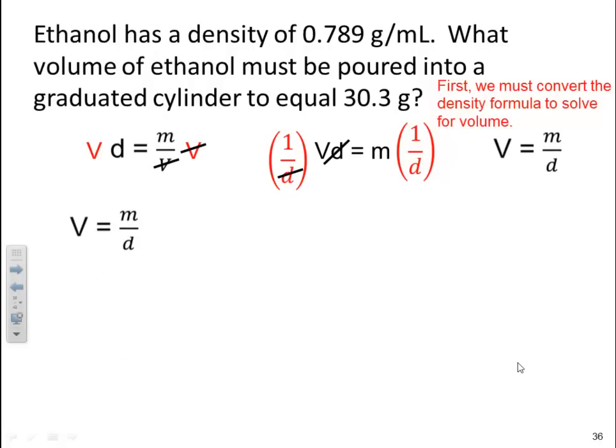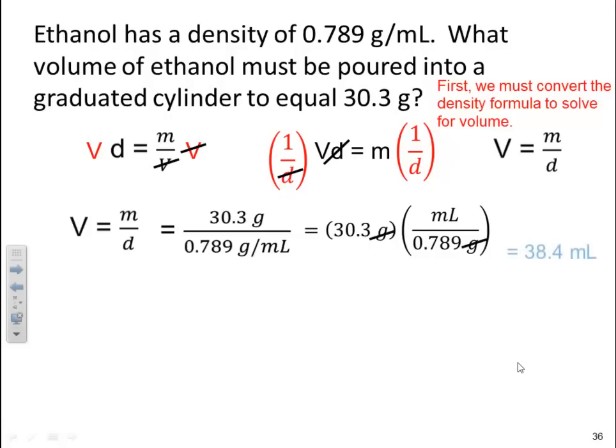So I have volume is equal to mass over density, which is mass is 30.3 grams over 0.789 grams per milliliter. If I want to rearrange this slightly and change that milliliter, which is the denominator of denominator, really it's in the numerator. I could write it this way and say 30.3 grams times milliliter over 0.789 grams. I can see that my grams cancel, leaving me in milliliters, which is what I want, which tells me it's 38.4 milliliters.